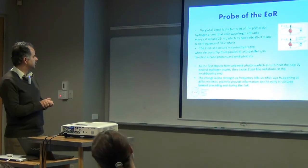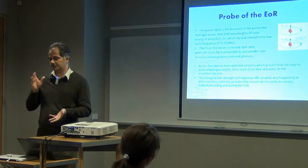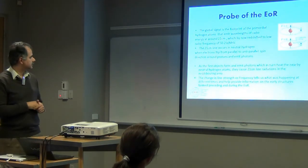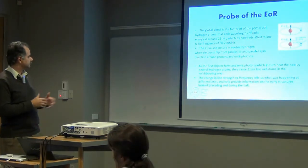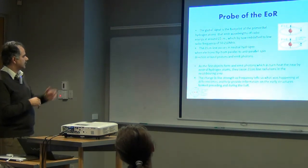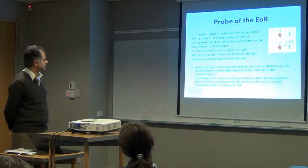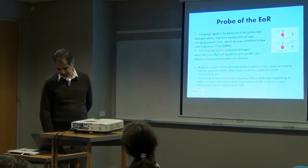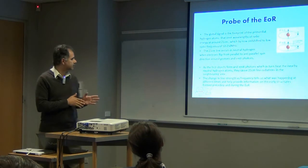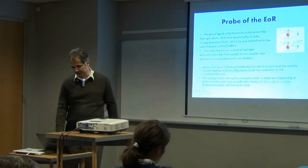Basically the 21cm emission line occurs in neutral hydrogen due to the fact that the electrons flip from a parallel spin to a non-parallel spin, from a higher energy level to a low energy state. And as a result they emit photons. So when the objects in the early universe start to form they emit photons and in turn they heat the nearby neutral hydrogen atoms and then they cause the 21cm line radiation in the neighboring areas. So the change in the line strength versus the frequency will tell us what was happening at different times and will help us to get some information during that epoch.